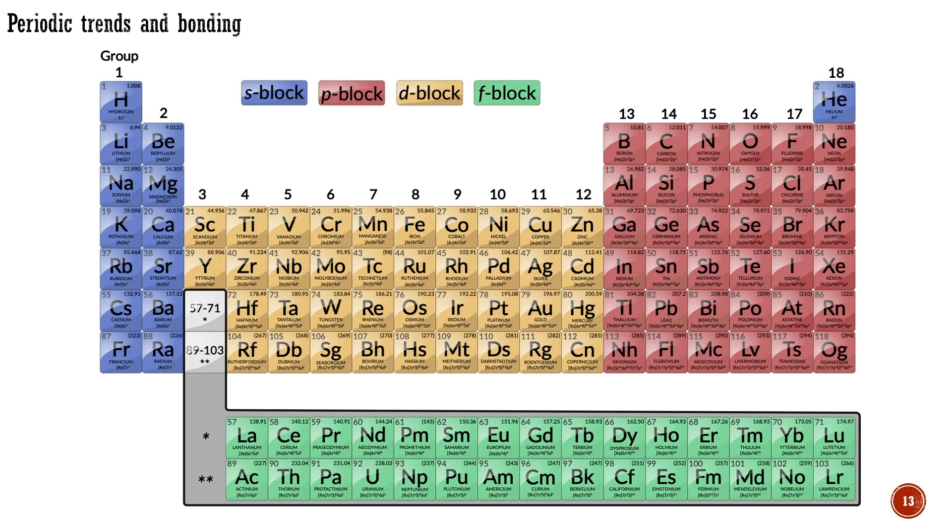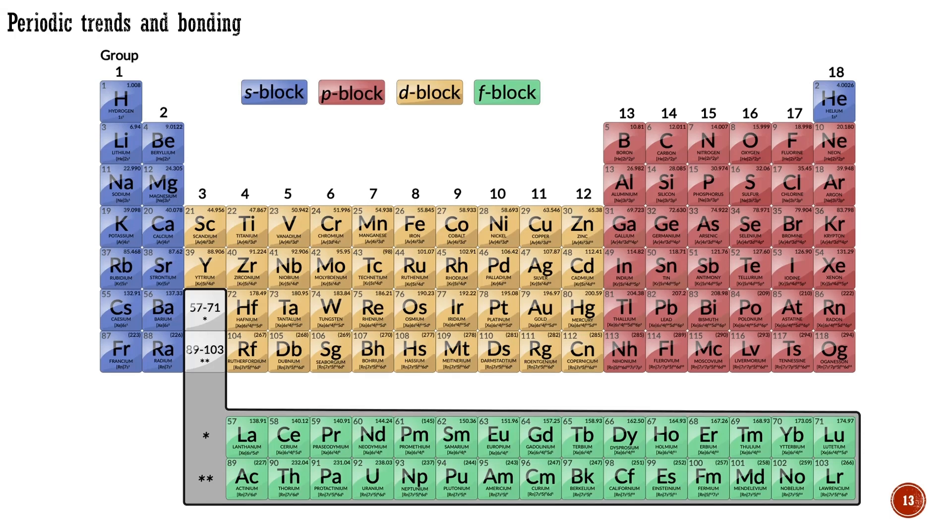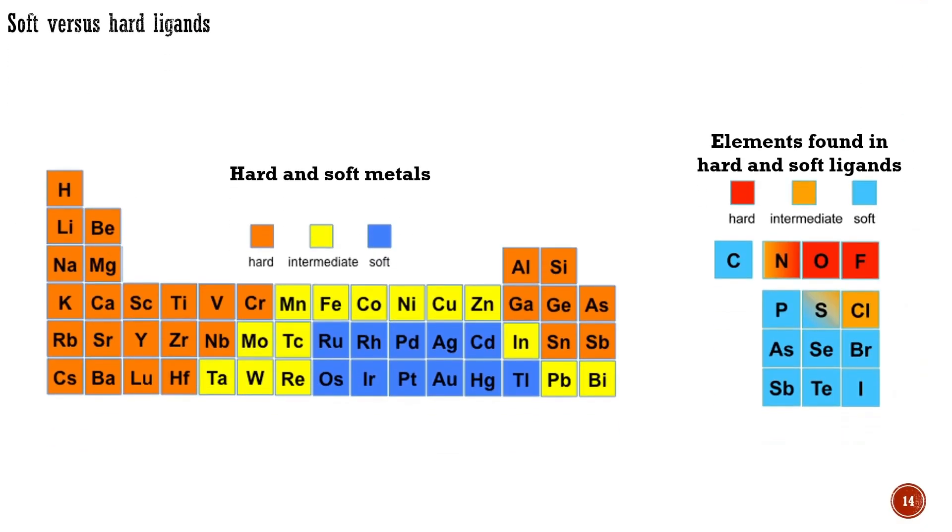Ligands may be hard or soft depending on their propensity for ionic or covalent bonding. Likewise, metals can also be hard or soft. The favored, well-matched combinations are a hard ligand with a hard metal and a soft ligand with a soft metal. Hard-soft combinations are disfavored because of the mismatch of bonding preferences.